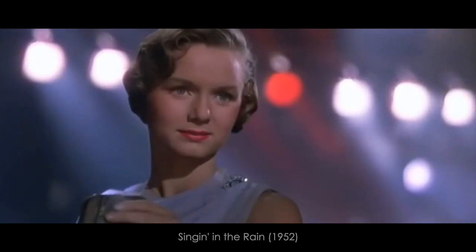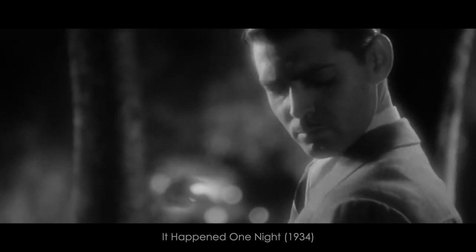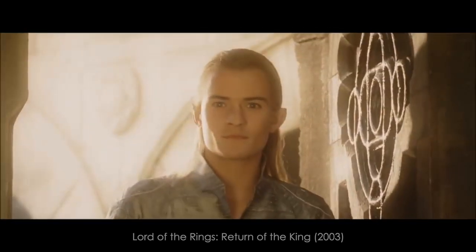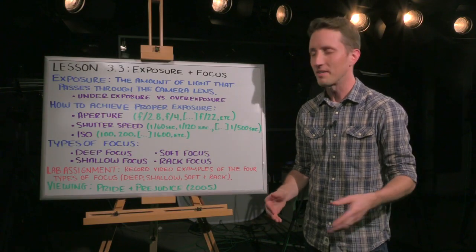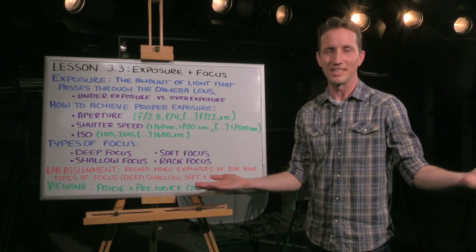Soft focus is easy. You just smack some Vaseline on the lens and you have soft focus. Or you just adjust the focus on the camera and soften it a little bit. Make it a little bit more blurry. Now you might be thinking, why would we ever want this? Well, a dream sequence might use some soft focus.